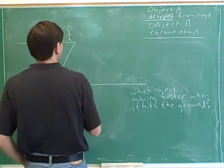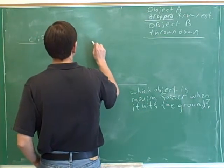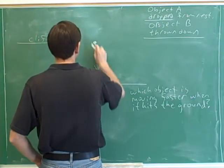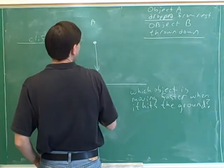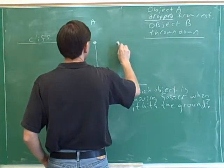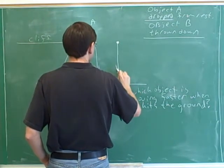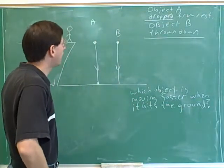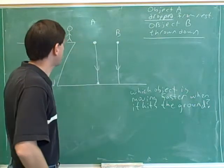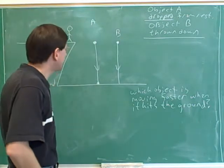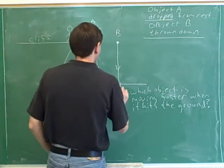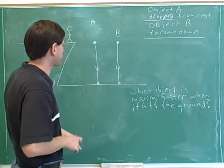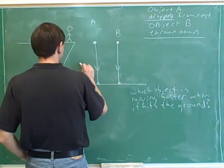Let's try drawing the paths here. Object A is starting at the cliff and moving down to the ground. It's always a good idea to draw the path. Object B is following basically the same type of path, but object B was thrown down while object A started from rest. Why don't we draw the velocity and acceleration vectors for both.